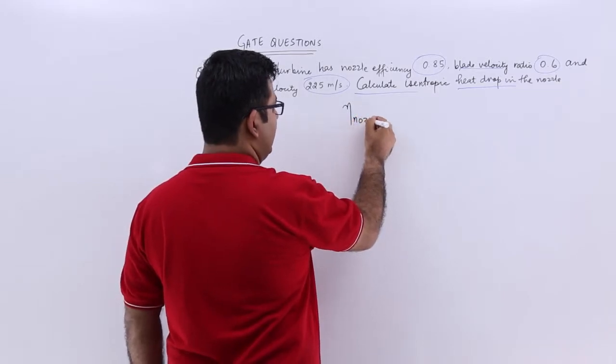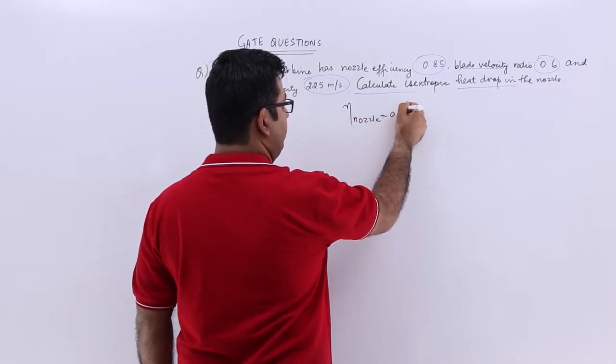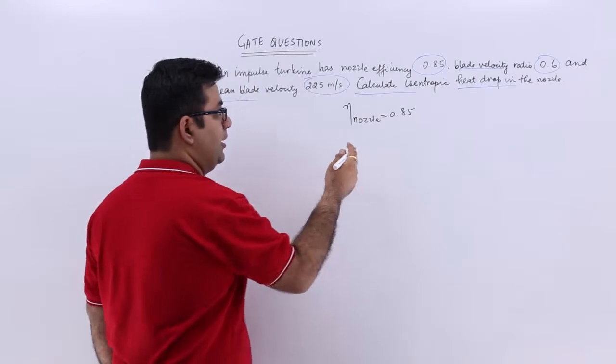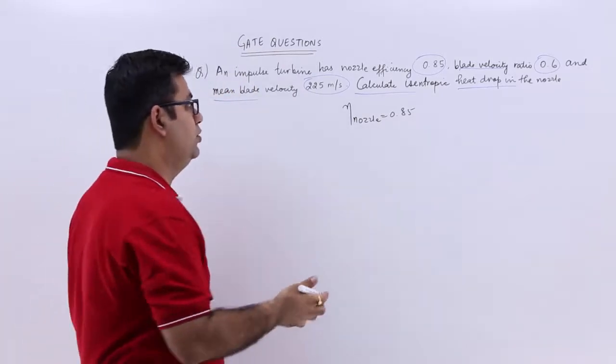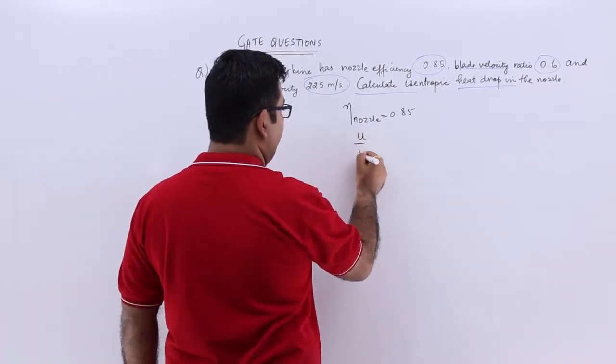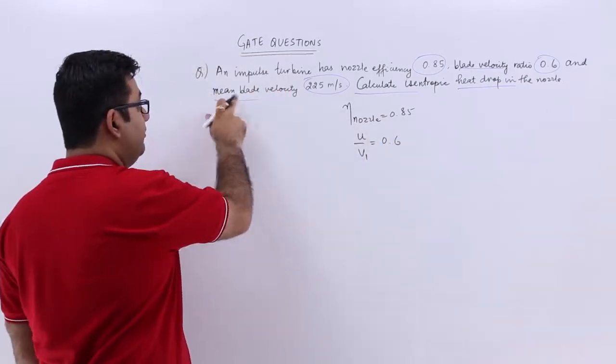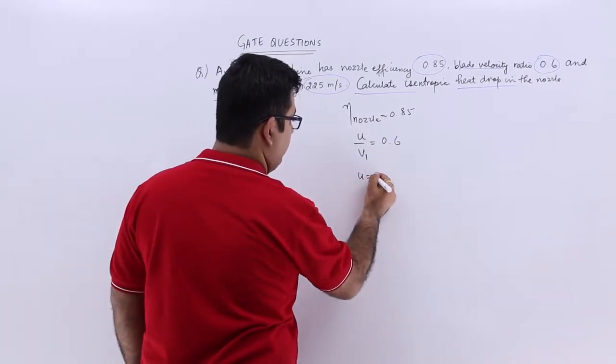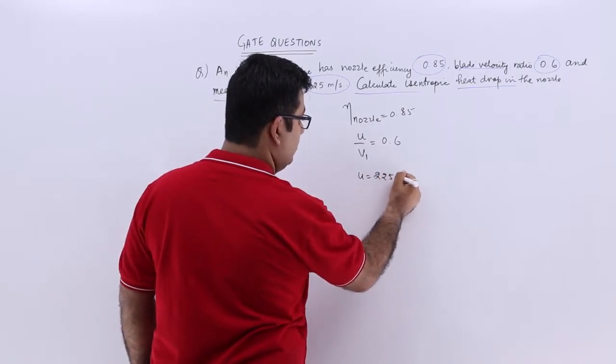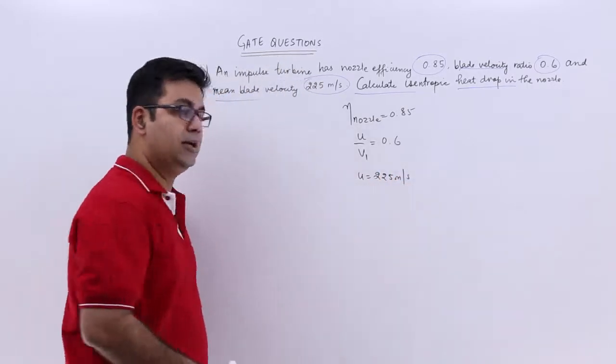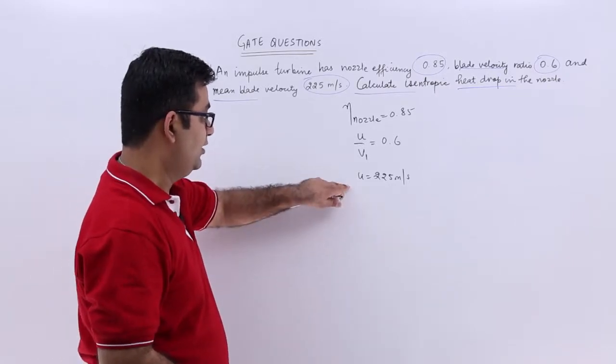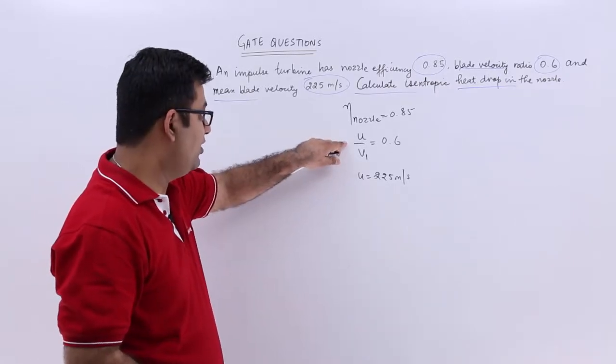The nozzle efficiency is 85%. The blade velocity ratio u/v1 is 0.6, and the mean blade velocity u is 225 meters per second. From this value and this ratio, I can calculate v1.